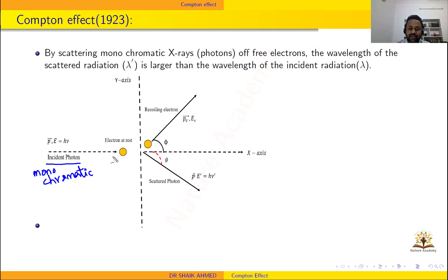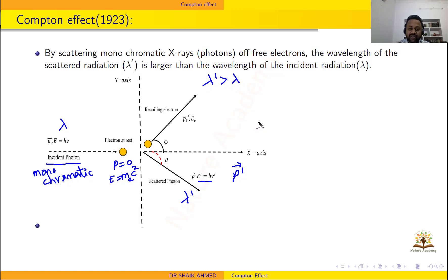When monochromatic photons are incident on electrons at rest, the electron will recoil in one direction and the photon will scatter in another direction. This is like a head-on elastic collision. At the initial position the momentum of the electron is zero. The scattered photon will have energy E' = hν' and momentum p'. The wavelength of the scattered photon is λ' and the wavelength of the incident photon is λ. Compton concluded that λ' is always greater than λ. We focus here on problem-solving techniques and shortcuts for competitive exams like CSIR and GATE.